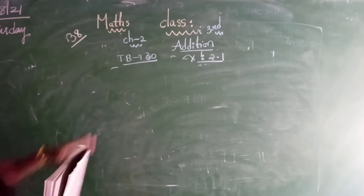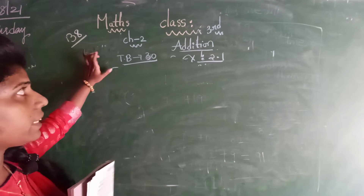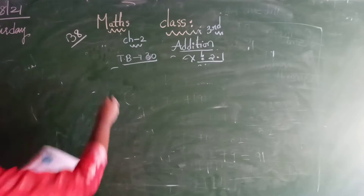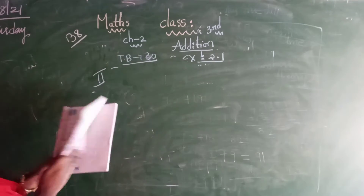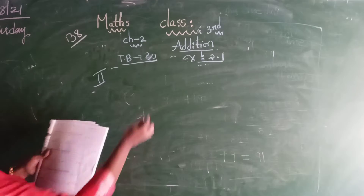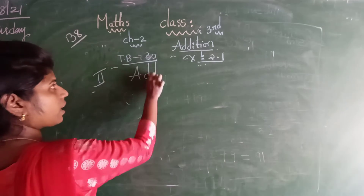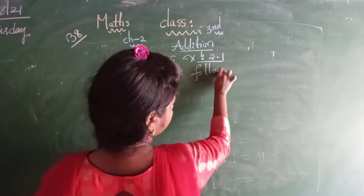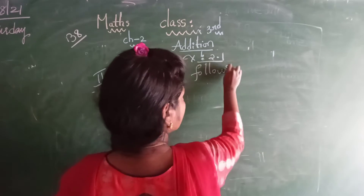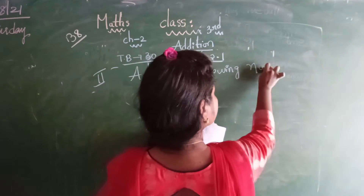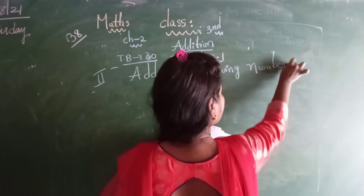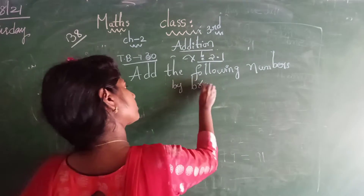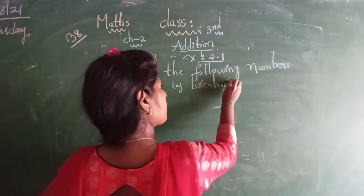Looking at our class start. Max, open the textbook to page number 30. So, what is the name of this bit here? Breaking both the numbers.